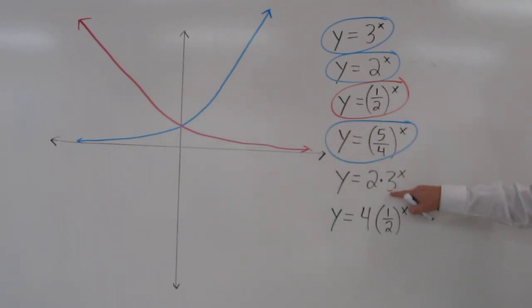This one, the 3 is being raised to the x power, and 3 is greater than 1, so growth again. In our last example, 1 half is less than 1, so this is decay. Thank you.